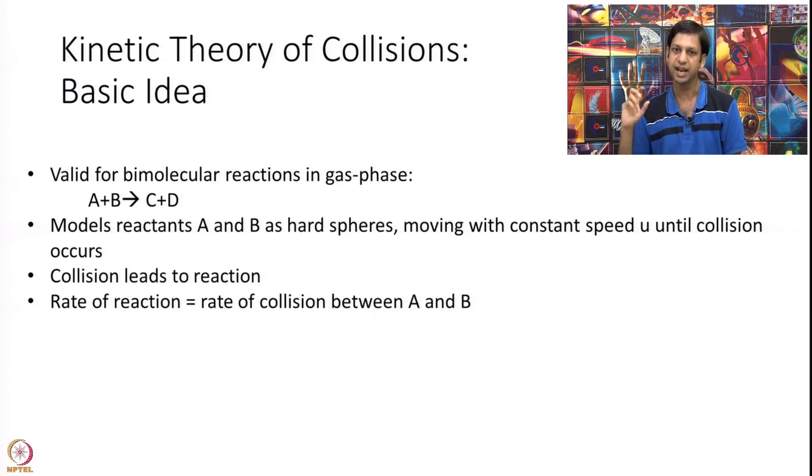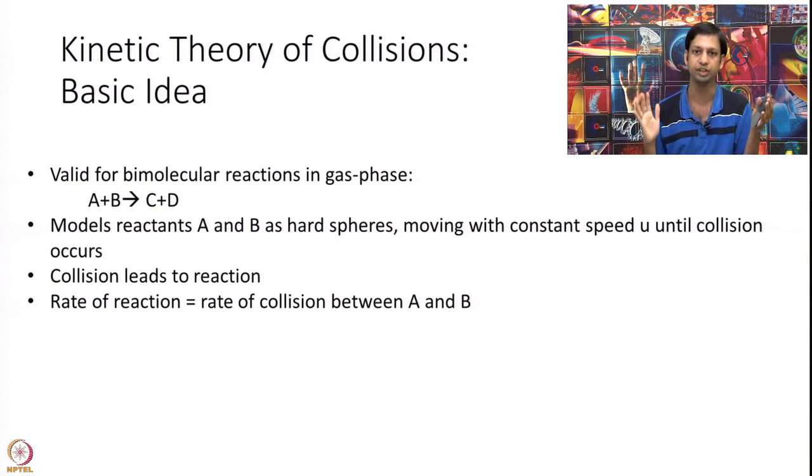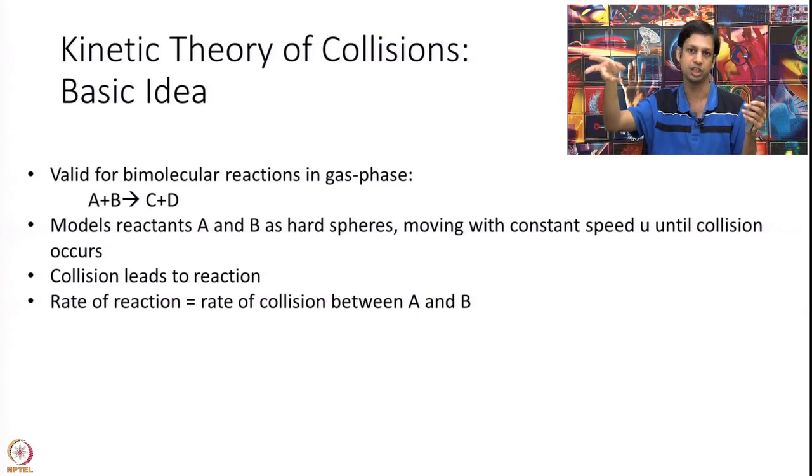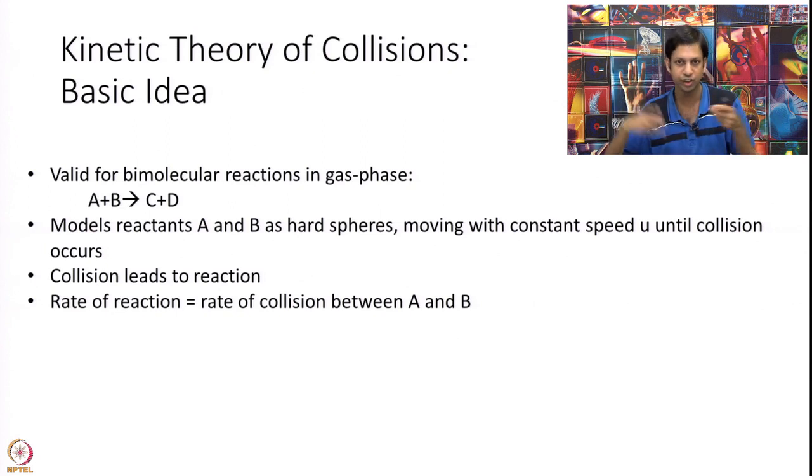The main idea how this theory thinks is that it thinks of A and B as essentially spheres moving around in a box, in some box of some volume V. I have some box, some volume V, some temperature T and I have these reactants A and B which are basically spheres in gas phase running around. We assume a very simplistic model. We are trying to get the first estimate, so we are going to make a lot of approximations.